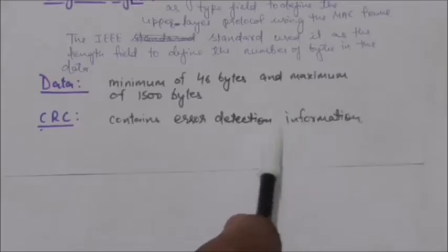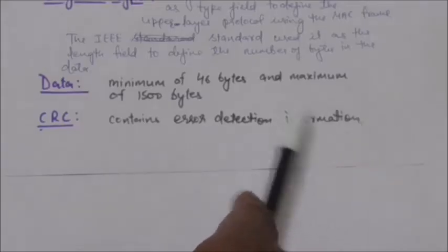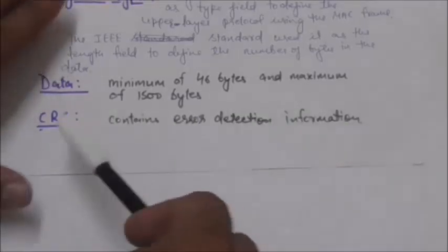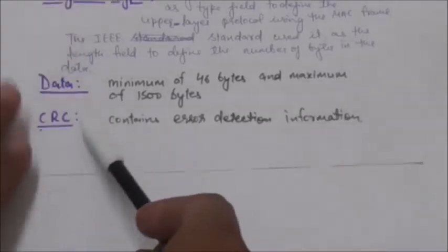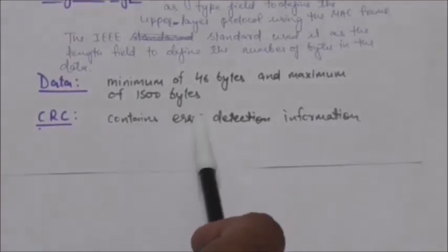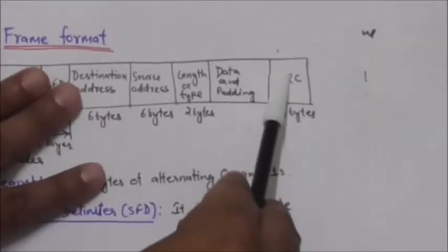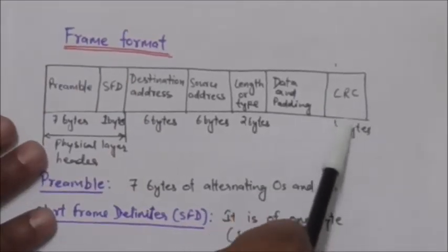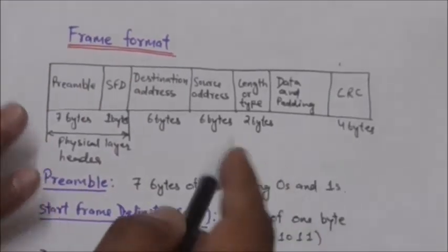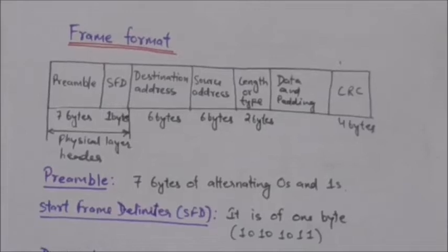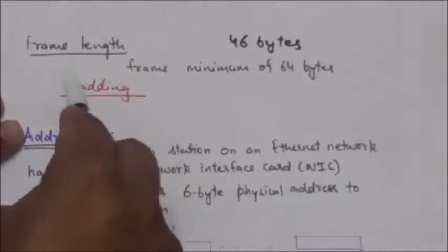The next field is CRC — Cyclic Redundancy Check. This field contains error detection information and is 4 bytes long, as you can see in the figure.